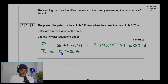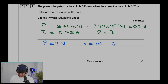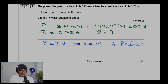The current provided is 0.75 amps. We need to calculate the resistance of the coin, so I need the equation relating power with current. Power equals current times voltage, and using Ohm's law, voltage equals current times resistance. Therefore, I replace the voltage with current times resistance, giving power equals current squared times resistance.